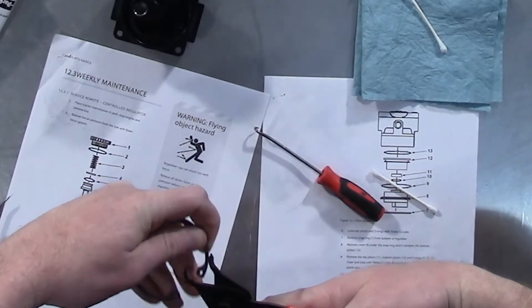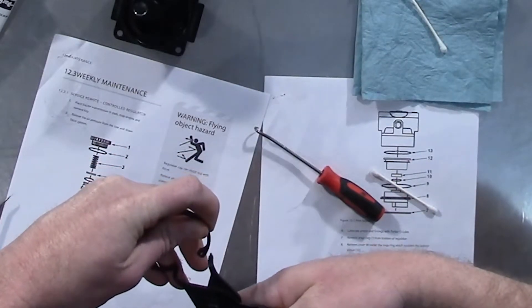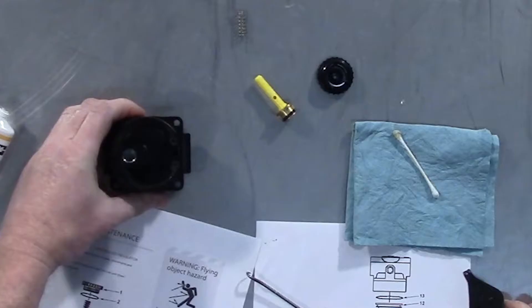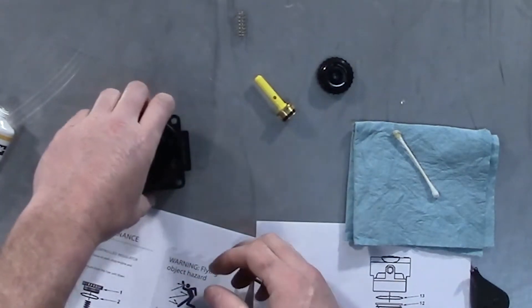We're going to use our snap ring pliers to compress the snap ring and install it in its proper location. And keep in mind that there is a flying hazard there, so you want to be extra careful with that.